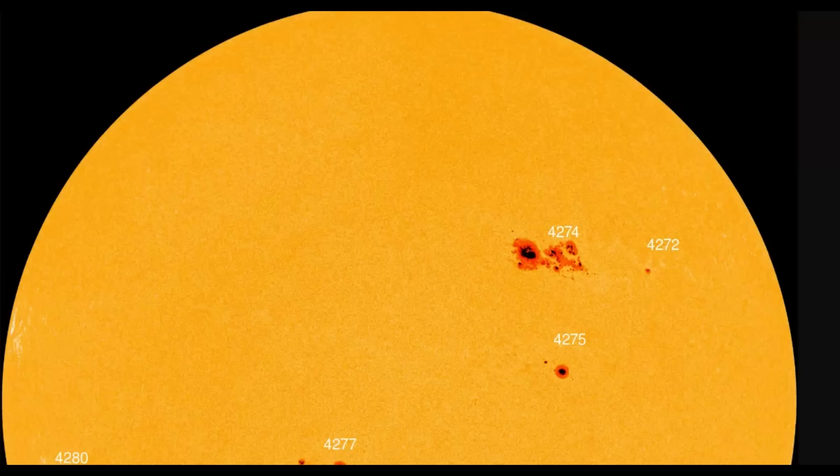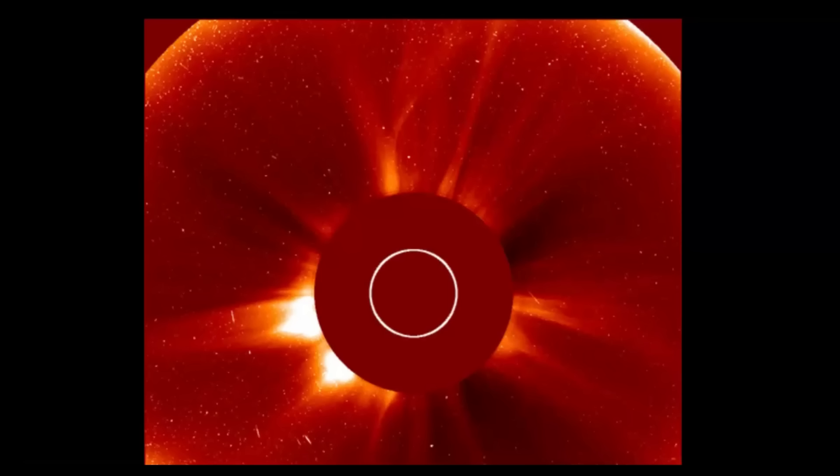Marking a significant escalation in solar activity as the sun nears the end of its maximum phase. It seems to be going out like a lion, doesn't it? An R3 and R4 strong to severe radio blackout affected the sunlit side of the Earth, primarily Europe, Africa, and parts of Asia. High frequency communications, aviation, and amateur radio were disrupted for 10 to 60 minutes with significant fading below 30 megahertz. No major aviation reroutes have been reported yet, but polar routes saw degradation in radio communication.